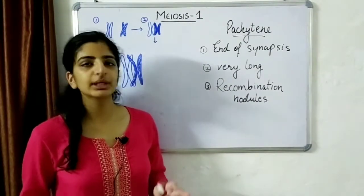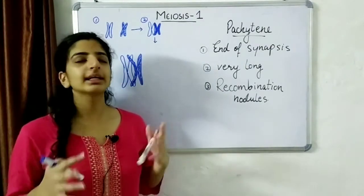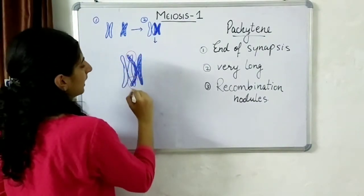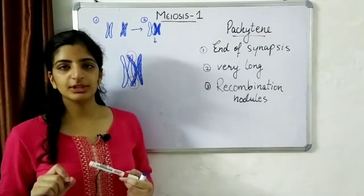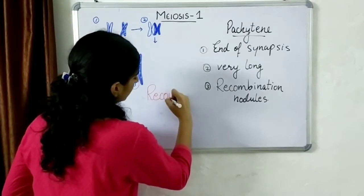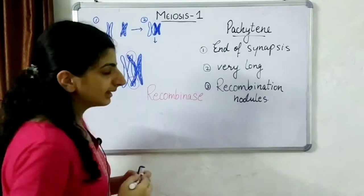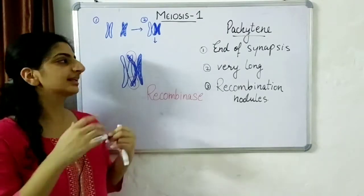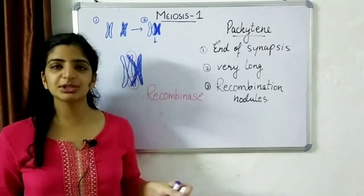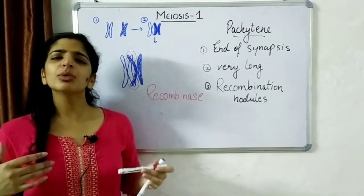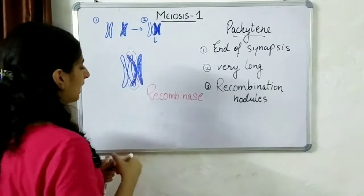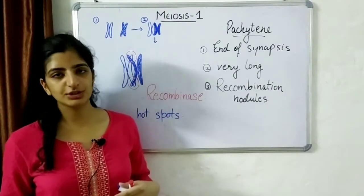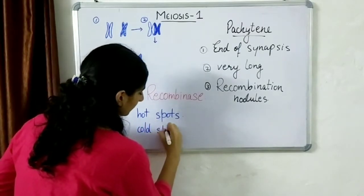Pachytene is the stage where synapsis comes to an end, and this stage can be very long — it can last up to days. This is the stage where recombination actually occurs, made possible by the recombinase enzyme. Recombination is the reciprocal exchange of genetic material between chromosomes, and it is absolutely random. Some regions are more likely to undergo crossing over and are known as hotspots, while regions with very low crossing-over frequency are known as cold spots.